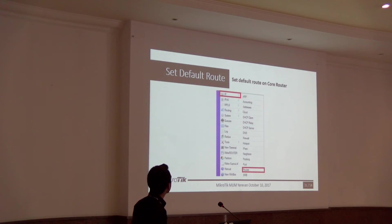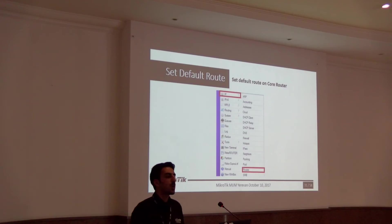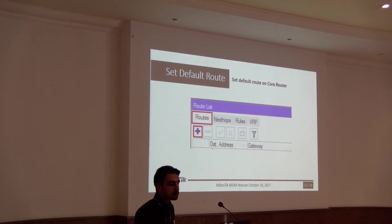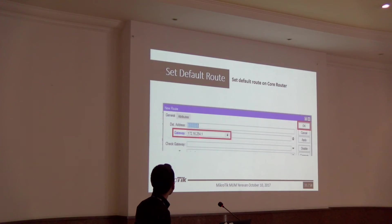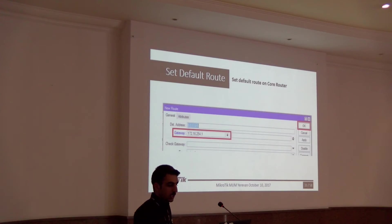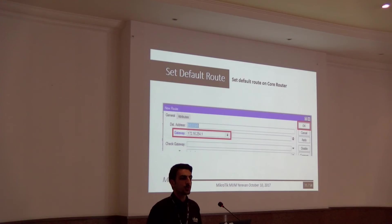We need a default route on the core router, because we want to forward all traffic to the Hotspot router for authentication. Go to the IP menu and click on Routes, then click Add. Set only the Gateway parameter — enter the Hotspot router's IP address. Now all traffic in the network after the core router will be forwarded to the Hotspot router.